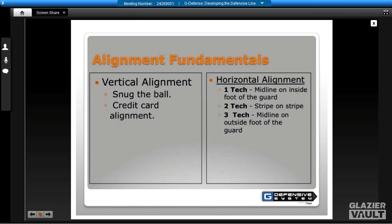When we talk about stance, we want to be able to get off and strike. When we talk about our alignments for our athletes, we want to talk about vertical alignment and horizontal alignment. When we talk about vertical alignment, we want to snug the ball. You'll hear me talk all the time about, hey man, let's take the air out of the ball. As long as your hand is in front of your helmet, you can really snug that ball with that credit card alignment because you know when your hand's offsides with the relationship to the tip of the ball.